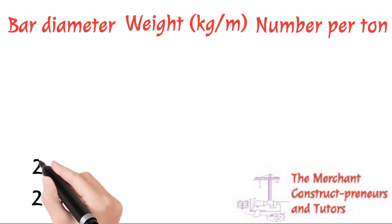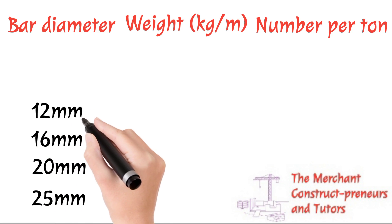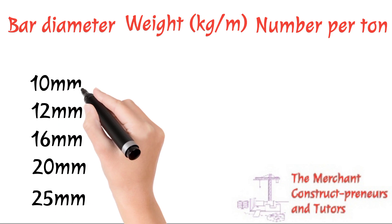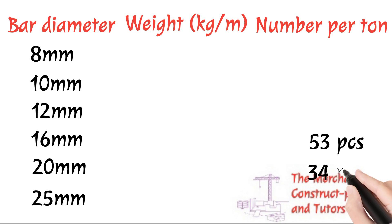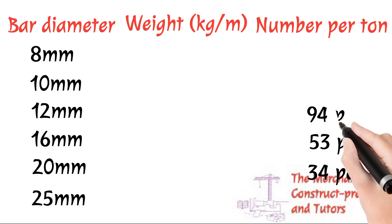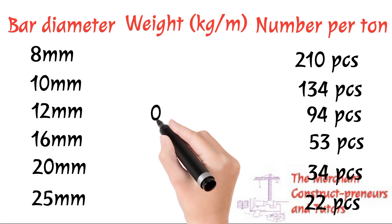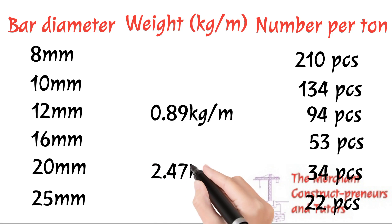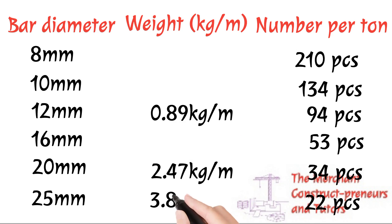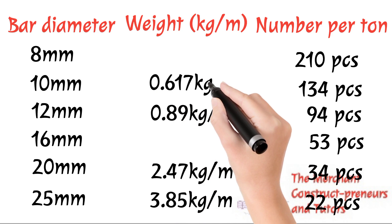I hope you understand what we are doing. So since we have gotten the value, the quantity of reinforcement in one ton of 8mm, now I don't want to bother us with so many calculations, so many repetitions. What I did is I already calculated for other diameters: I've calculated for 10mm, I've calculated for 12mm, I've calculated for 16mm, I've calculated for 20mm, I've also calculated for 25mm. So to get the number of reinforcements per tonnage of each of these bar diameters and also the weight per meter.